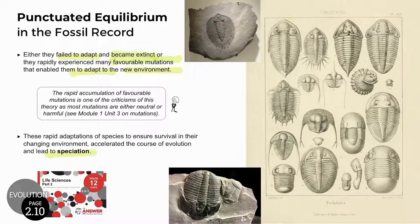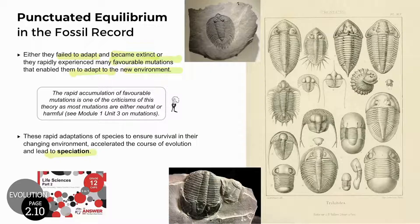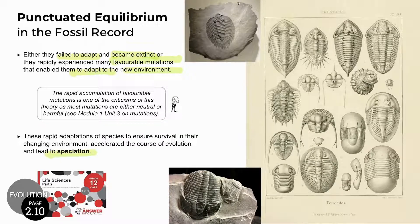Some scientists query Gould and Eldridge's theory, as most known mutations are harmful, and this theory requires many favorable mutations at a very early stage of development without those mutations being a disadvantage to the organism.